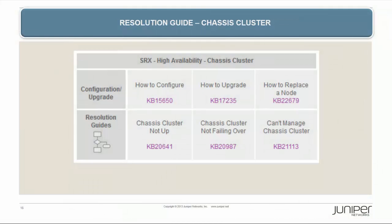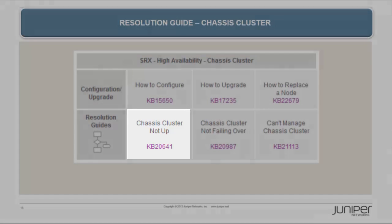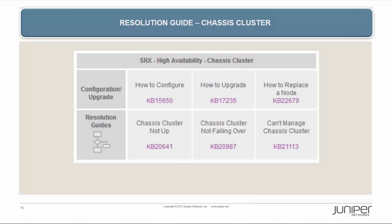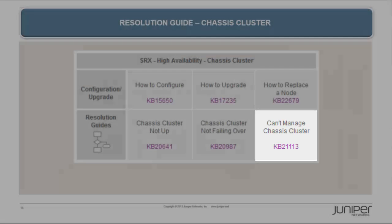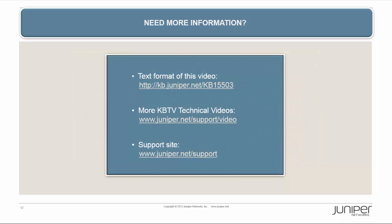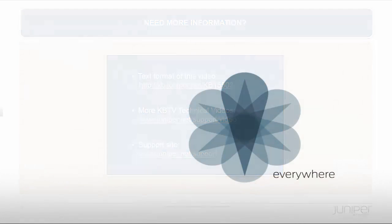For troubleshooting, refer to the chassis cluster resolution guide in KB21905 at kb.juniper.net. It contains configuration and upgrade articles as well as a resolution guide and step-by-step troubleshooting for chassis cluster not up, chassis cluster not failing over, and can't manage chassis cluster. Refer to KB15503 on kb.juniper.net for the text version of this video. Be sure to check out other videos at www.juniper.net/support/video. If further assistance is needed, please visit our support site at www.juniper.net/support. Thanks for watching.